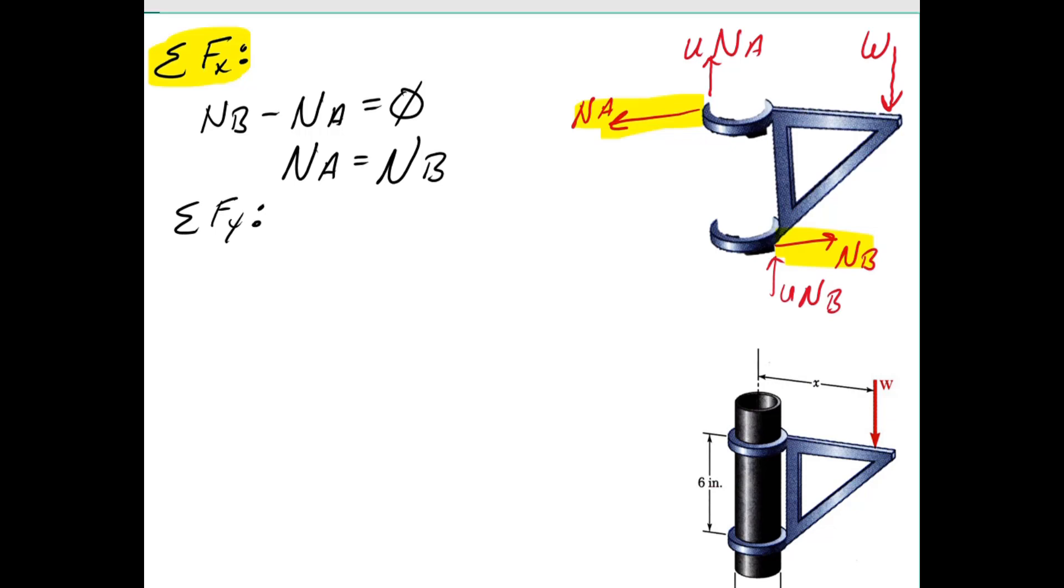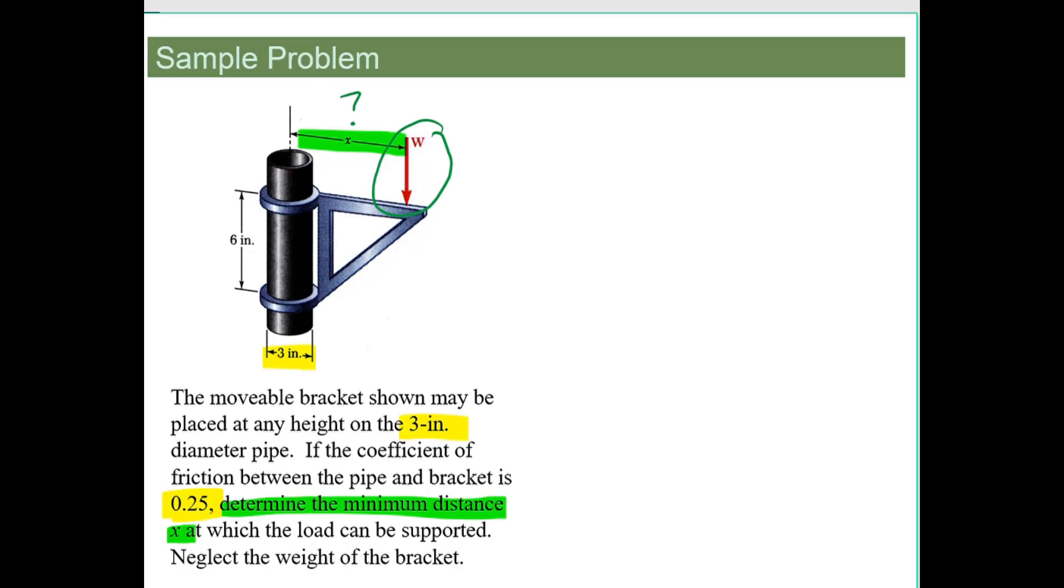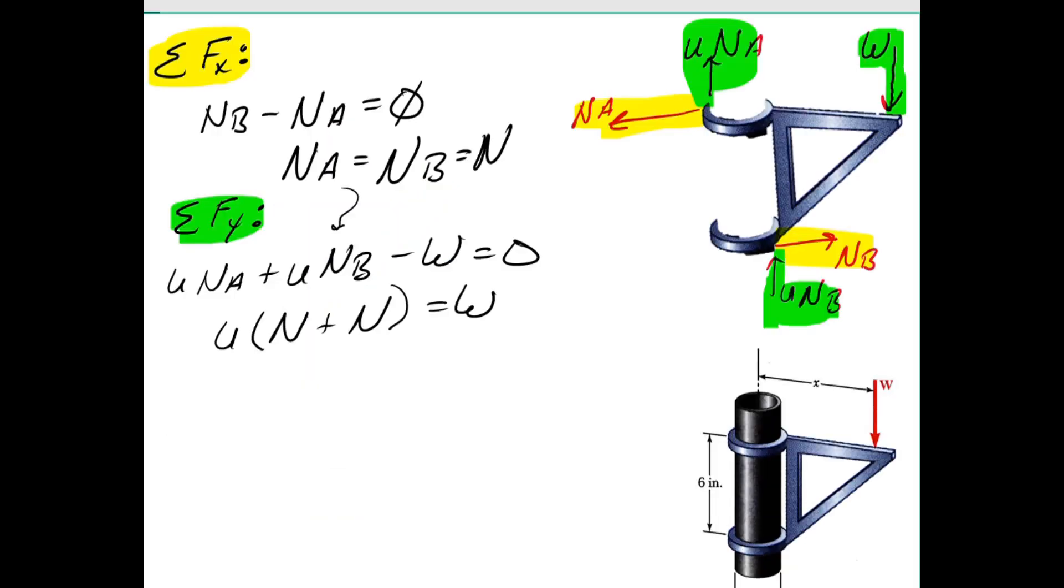Okay, in the y direction, we have friction holding it up and the weight acting down. So we can look at the friction coefficient is the same for both sides. The normal force is the same for both sides. So let's go ahead and just call that normal force N since it's the same either way. And we can plug in the friction coefficient. From the problem statement, it was 0.25.